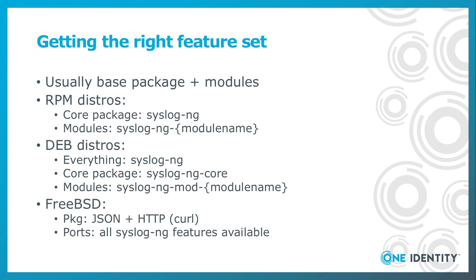Getting the right feature set when installing syslog-ng is not always easy. In most Linux distributions, syslog-ng is packaged in a modular way. There is a base package which contains only features that do not have extra dependencies, and there are many sub-packages which contain modules that pull in additional packages. This way, all syslog-ng features can be made available without pulling in hundreds of megabytes of dependencies. In most RPM distributions, the syslog-ng core package is called syslog-ng. It contains all features and dependencies necessary for the default syslog-ng configuration, so it also includes JSON.